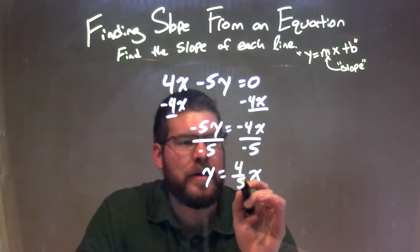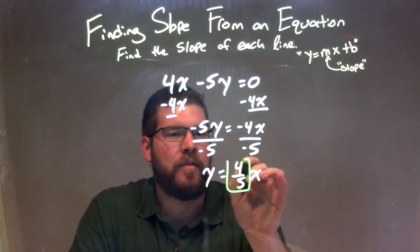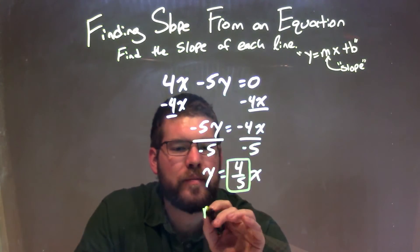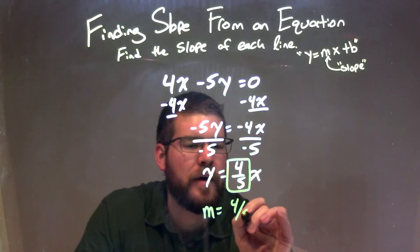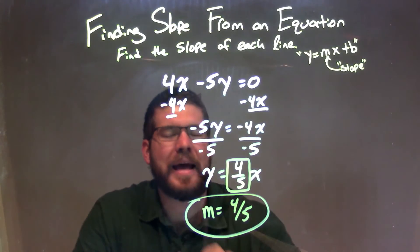So we have y equals a positive 4 fifths x. Our m value is that 4 fifths, the coefficient in front of x there. So our slope is 4 fifths, and that is our final answer.